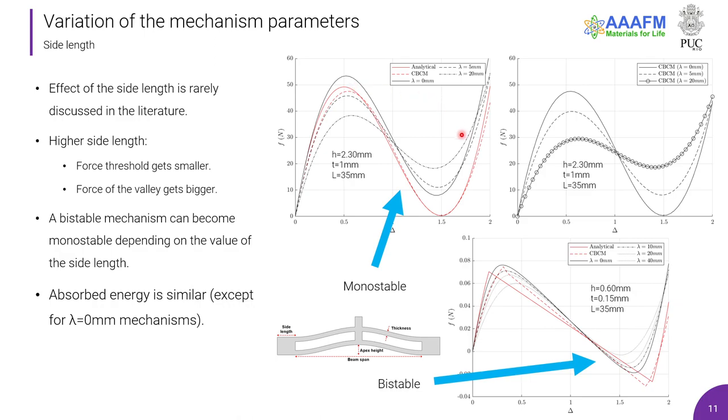The second point is that a bistable mechanism can become monostable depending on the value of the side length. As we can see here, the mechanism with no side length was bistable once it reached a level of negative force. When I increase the side length, it's getting close to a zero force value, becoming marginally bistable. An interesting result is that the absorbed energy of the mechanisms with side length is similar, and only the force changes. The decrease of force threshold is compensated by the increase of the force of the valley.